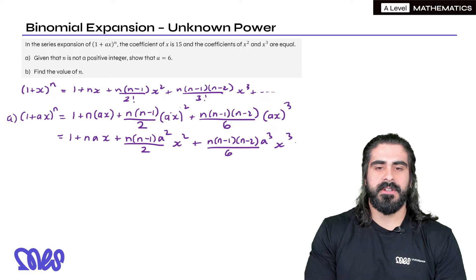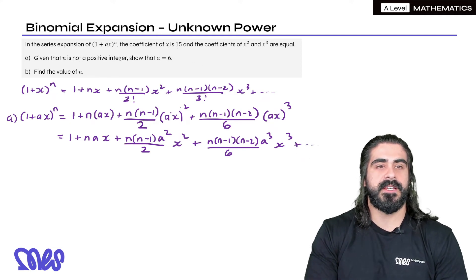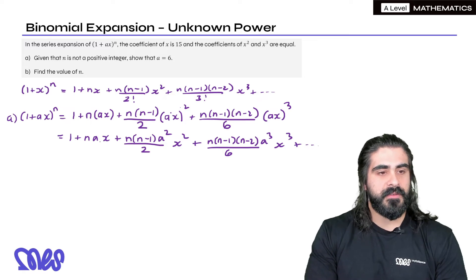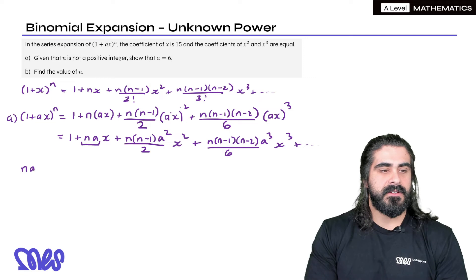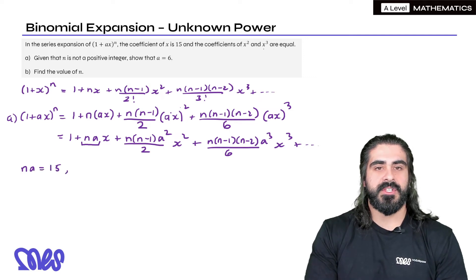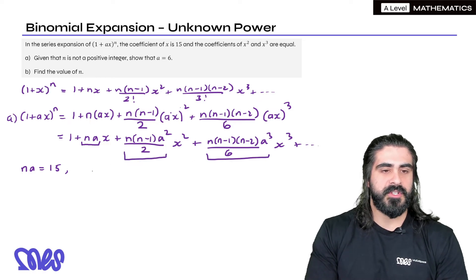And that's our expansion and it does keep going on forever but we're not interested because it says the coefficient of x is 15. So what is the coefficient of x? It's na. So we're going to say na is 15 and it says the coefficients of x squared and x cubed are equal. Well here's the coefficient of x squared and here's the coefficient of x cubed. We're just going to equate them.